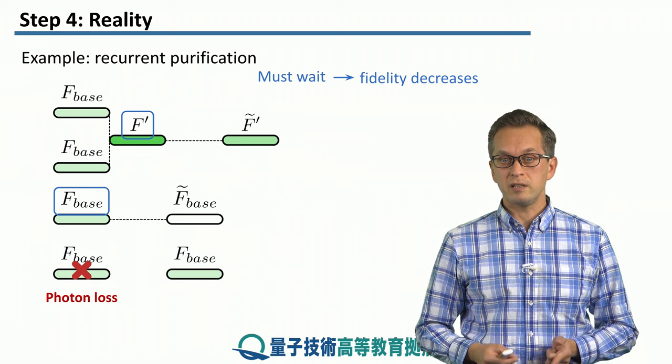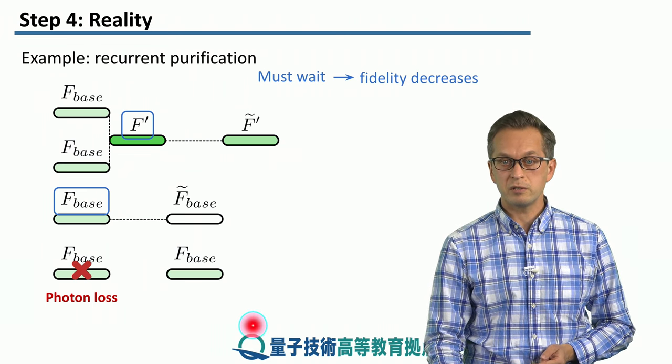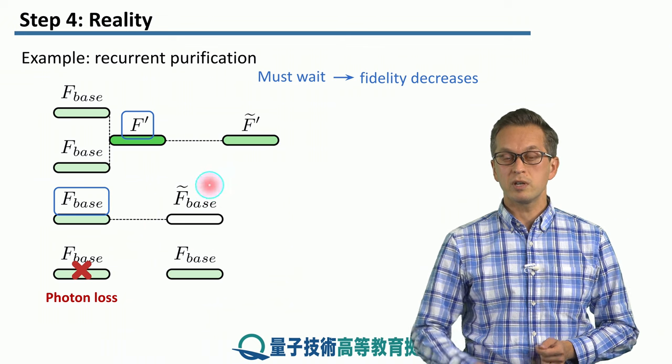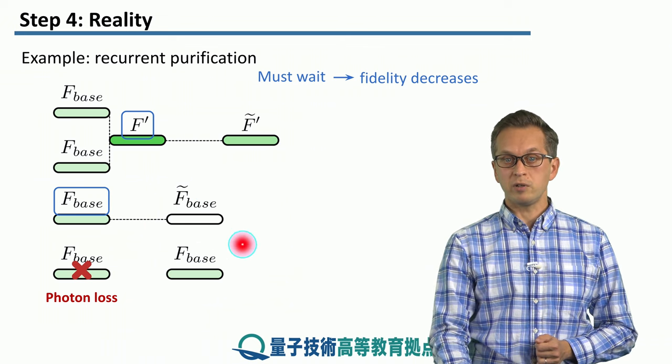And they have to wait until we manage to distribute a base bell pair, which then we can use with this pair in order to execute purification.